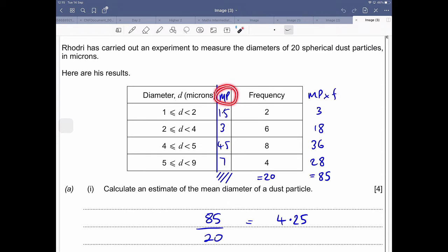Now, creating this midpoint column here and seeing the numbers 1.5, 3, 4.5 and 7, because they are the numbers in the middle of those categories, will get you one mark.